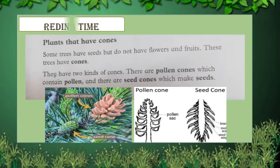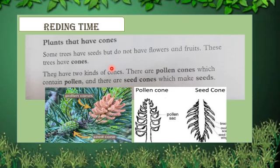Now our topic is: plants that have cones. Some trees have seeds but they do not have flowers and fruits. These trees have cones. They have two kinds of cones: there are pollen cones, which contain pollen, and there are seed cones, which make seeds. So some plants have seeds but they do not have flowers and fruits.